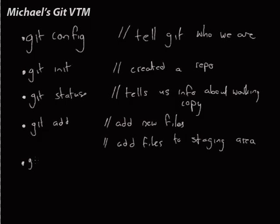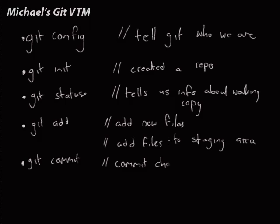git commit was to commit our changes. Remember that git commit only committed changes that we'd added to the staging area, which was fine, but if we're changing a lot of files for each commit then that becomes a problem. So we can use the flag -a, and that tells git to commit all of our changes whether we've staged them or not. There was also git reset, which cleared the staging area.